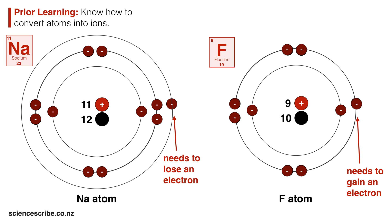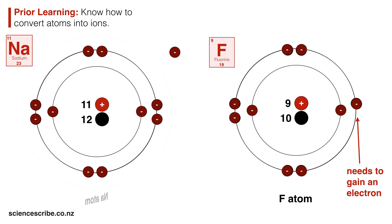To form an ion, sodium is going to lose that one electron. If you've been wondering what happens to these electrons when they're lost, or where atoms gain their electrons from, this is how it works: sodium can lose that one electron and give it to the fluorine atom. Remember that once it loses that electron, it's called the sodium ion.